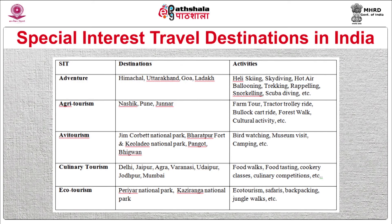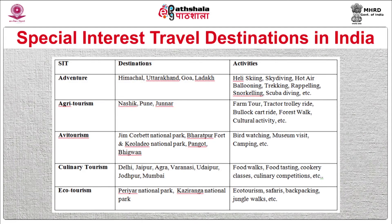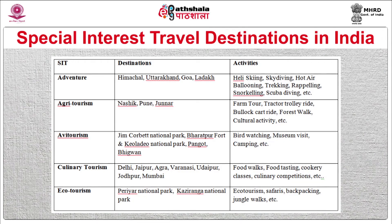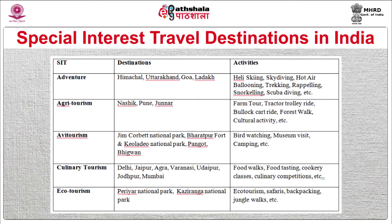For avitourism in India, the destinations of Jim Corbett National Park, Bharatpur and Keoladeo National Park, Pangot, and Bhigwan are famous, with activities including bird watching, museum visits, and camping.